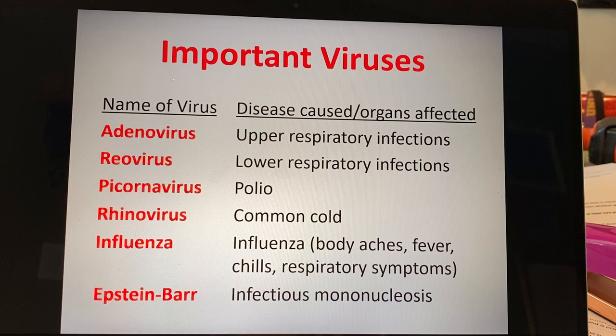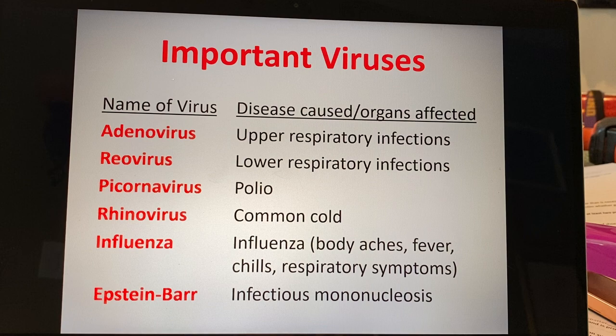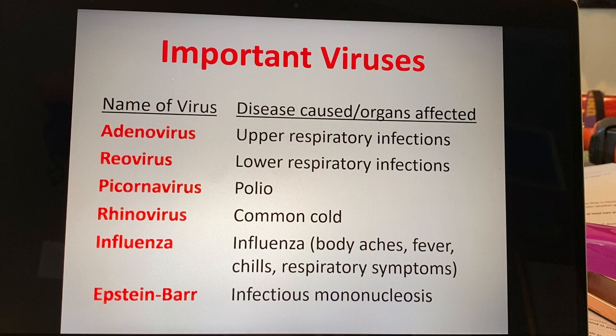Epstein-Barr causes infectious mononucleosis, or mono. In America we kind of laugh off Epstein-Barr and mono. I got it in high school — it was called the kissing disease. It can be spread by teenagers sharing bottles or cans, smooching, lip gloss, or whatever. Normally what it causes — I remember getting it again in graduate school — was basically sleeping 20 hours a day, waking up to eat and then going back to bed. But you recover from it. Hopefully when you get it you get lifelong immunity, though some people don't.